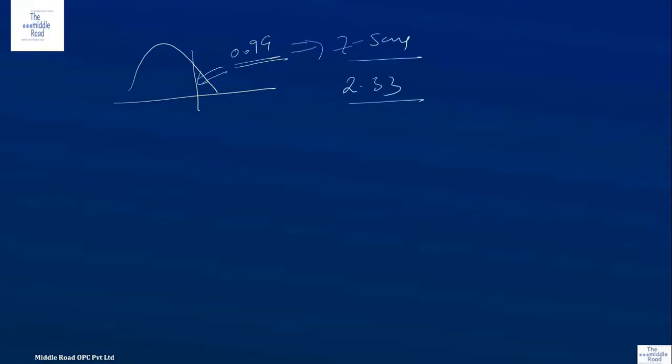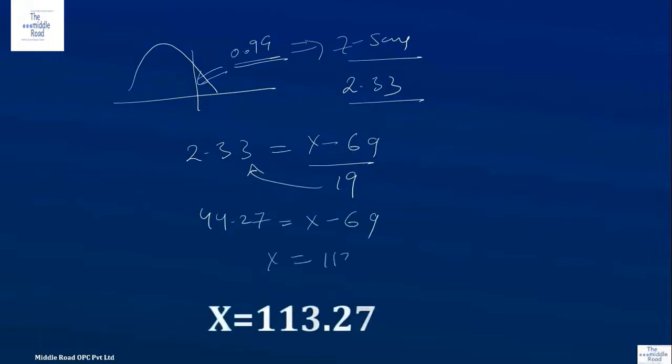For the marks, 2.33 is the Z-score. To find the marks, use the formula: Z = (X - mean) / standard deviation. The mean is 69 and the standard deviation is 19. So 2.33 times 19 equals 44.27, which equals X minus 69. This comes to X = 113.27.